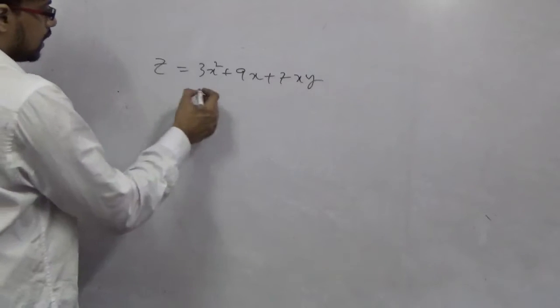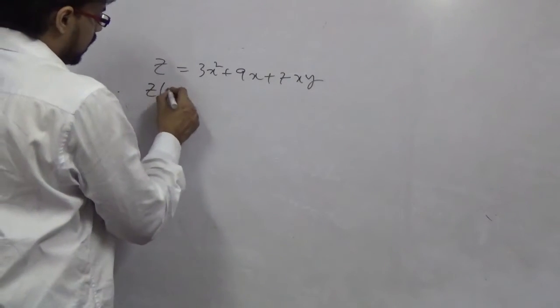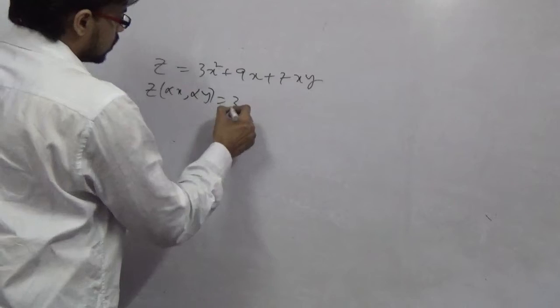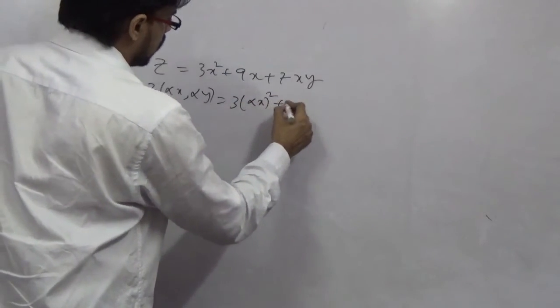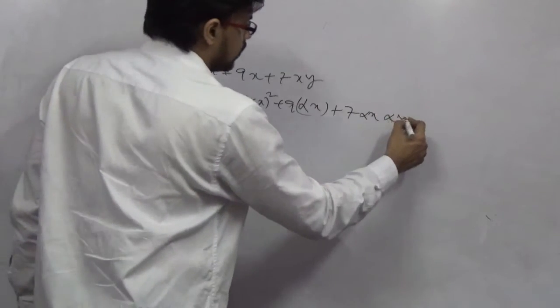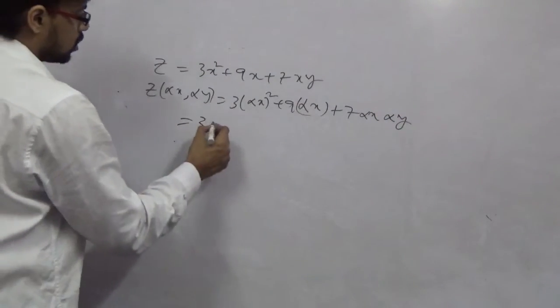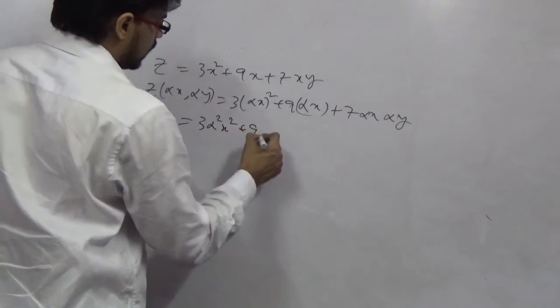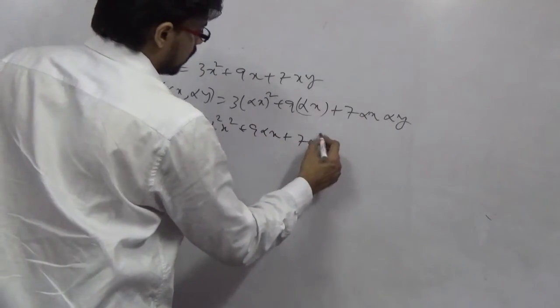Here, if you take alpha, if you place alpha at the place of x and y, so this will be alpha x squared, 9 alpha x into alpha y. So this will give you 3 alpha square x squared, 9 alpha x, 7 alpha square xy.